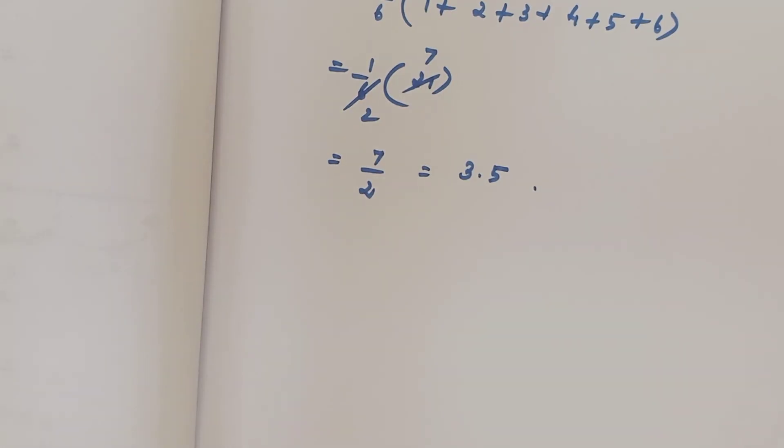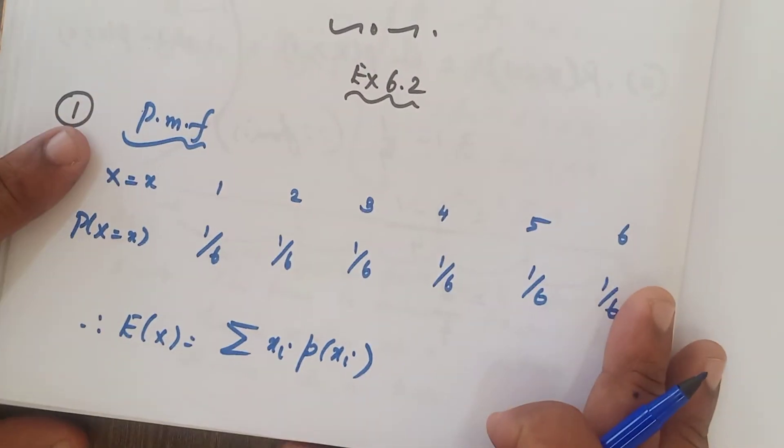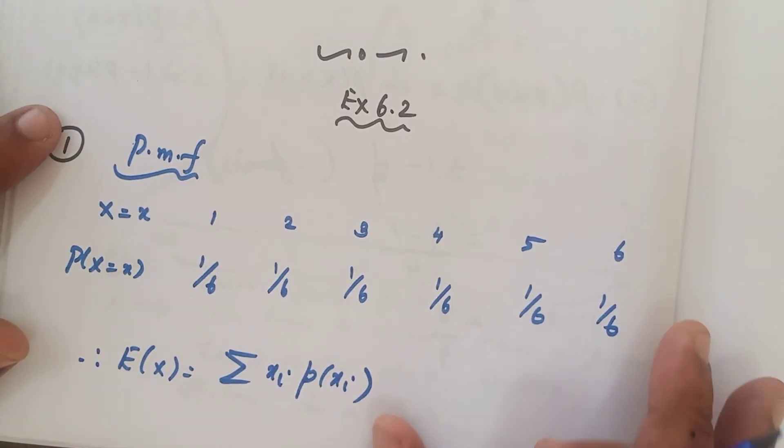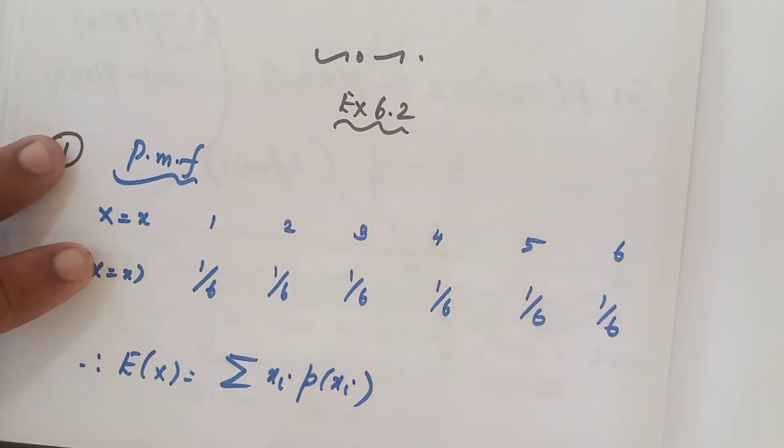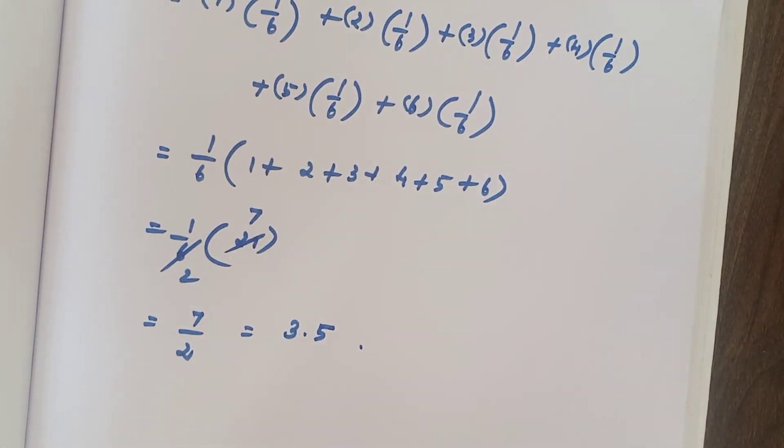That is the expected value of the random variable x. This is called the discrete random variable because we have the countable number of values, finite values. So it is called the discrete random variable. Problem number 1 is completed, then I will be teaching problem number 2 in the next video. Thank you, thank you so much.